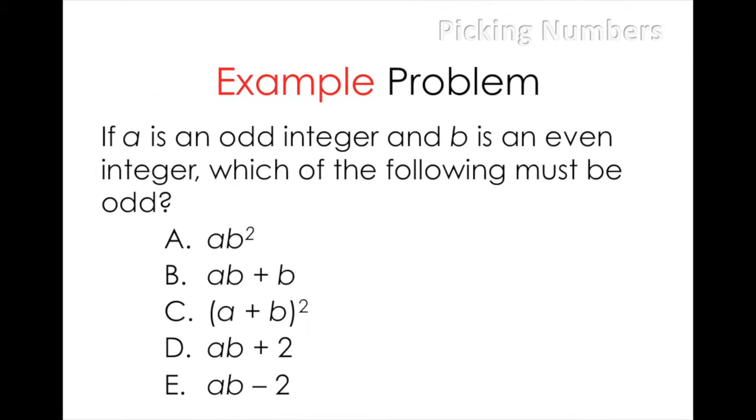So now that we've gone over how and when to use the strategy, let's try this example problem. If A is an odd integer and B is an even integer, which of the following must be odd?